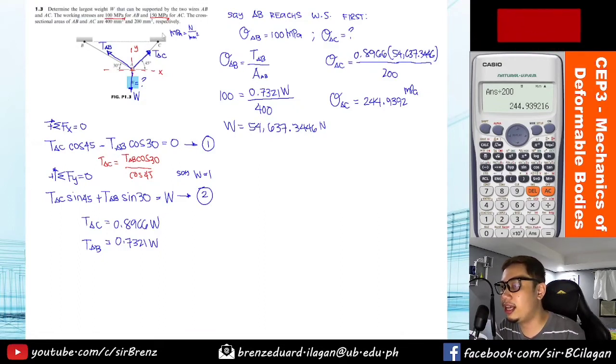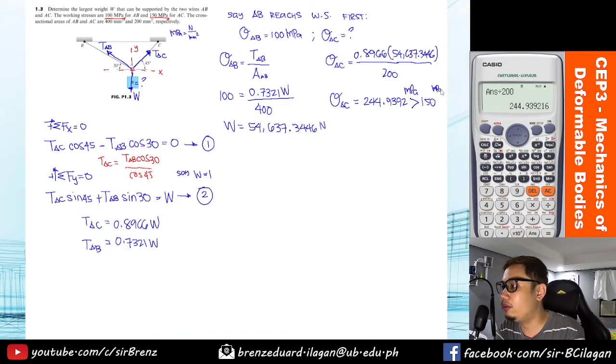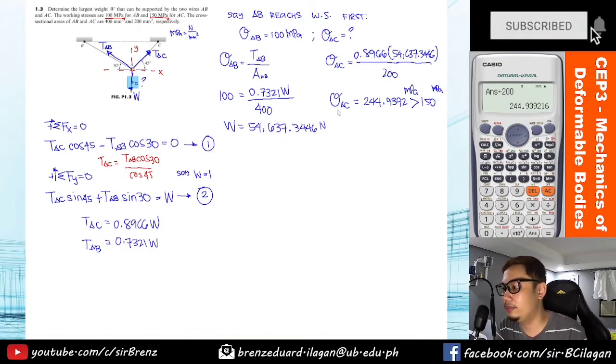So what can you observe from our answer for stress in AC? Again, the working stress for AC is 150 megapascals, but we got 244. Okay, so that means 244 is greater than 150 megapascals. So what can you conclude from this answer we got for stress AC?